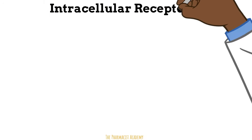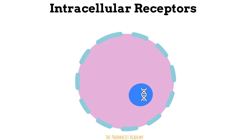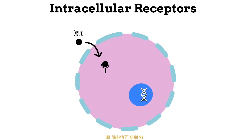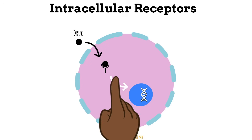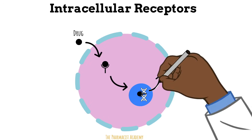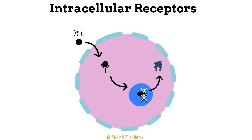Finally, we have intracellular receptors. These are receptors within the cell itself. The drugs that bind to them are usually lipophilic, so they can cross the membrane and bind to the receptor. The drug-receptor complex would then move into the nucleus of the cell, bind to the DNA, and regulate gene expression, leading to synthesis of proteins.